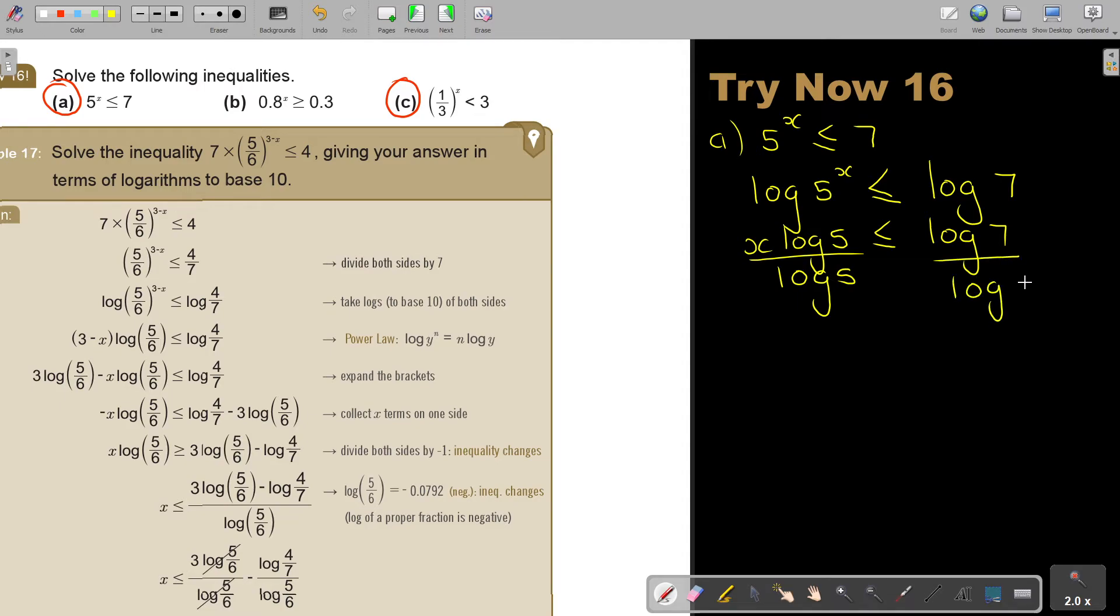And you can test it. Press it on your calculator. If I press log 5, I see I get positive 0 point something, so the inequality sign will stay the same. So now I can press on my calculator log 7 divide log 5. And that's going to be 1.21. And that's number A.